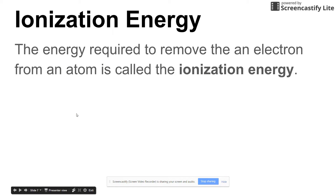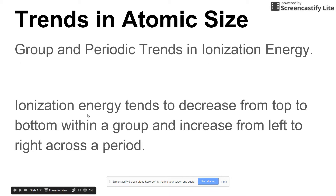The next trend is ionization energy — the energy required to remove an electron from an atom. In general, ionization energy decreases from top to bottom within a group, and it increases from left to right across a period. This is exactly the opposite of atomic radius, and the two are linked.